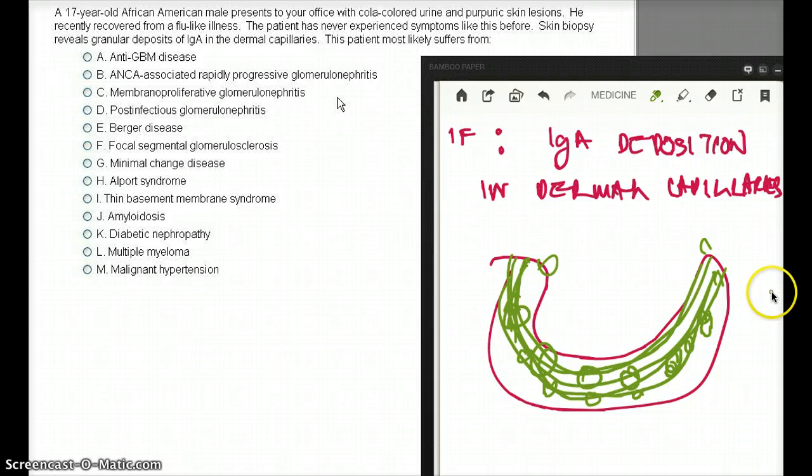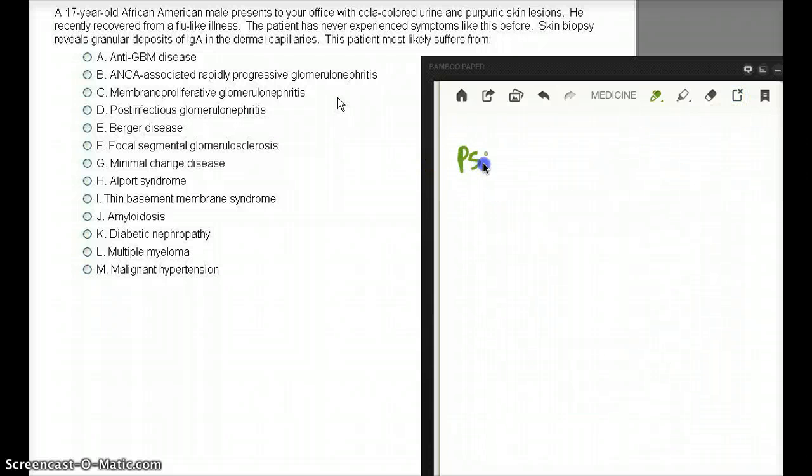Now, I would like to make a distinct difference between post-streptococcal and IgA because it could look very similar. One of the primary differences between post-streptococcal and IgA is that post-streptococcal is going to have decreased complement. IgA is going to have normal complement. So, PSGN is going to have decreased complement. And IgA is going to have normal complement.